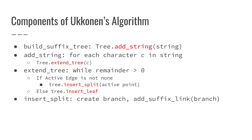Putting together the different components of Ukonen's algorithm: to build a suffix tree we add one character at a time of the whole string using something like an add_string function. Within add_string, we will be extending the tree via an extend_tree function. Inside extend_tree, while the remainder is greater than zero, depending on what the active edge is, we'll either be inserting a leaf — that's a very simple case — or if we actually have an active edge, we will be splitting that active edge, which consists of creating a new branch and adding that branch.